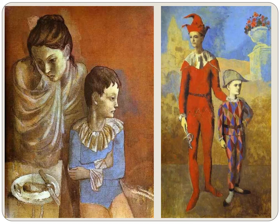These are also Rose Period paintings. We can tell because he used warm colors, especially in the circus costumes. The mother and son are looking a little bit tired after their acrobatic performance in the circus. The boy is still wearing his costume, and they have sat down for a meal.